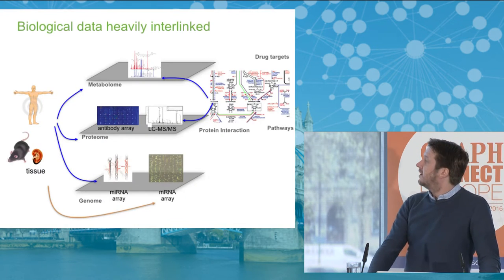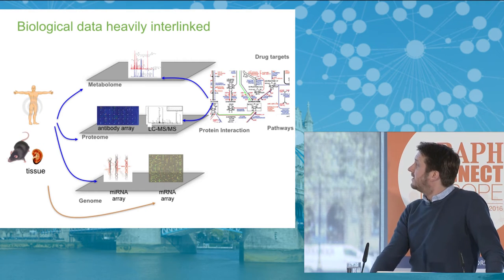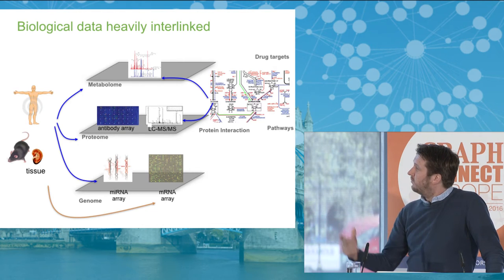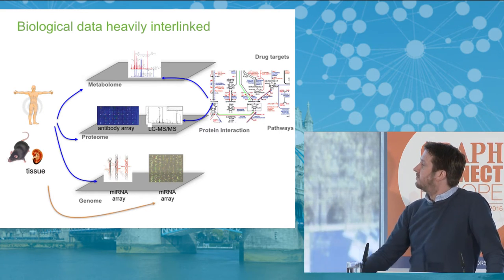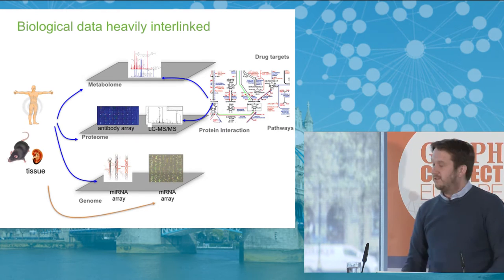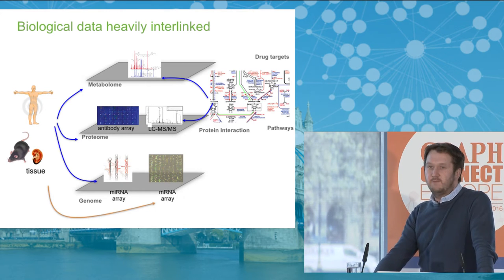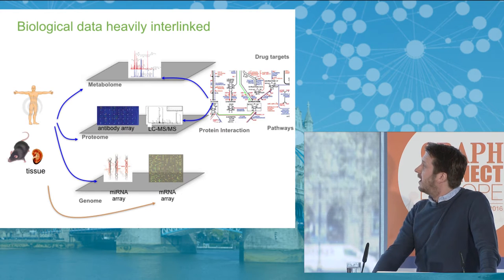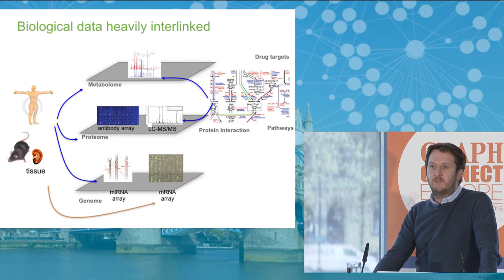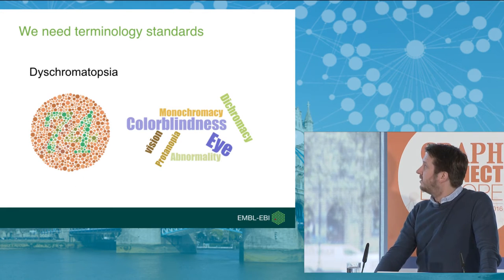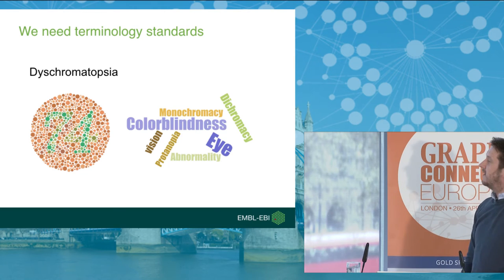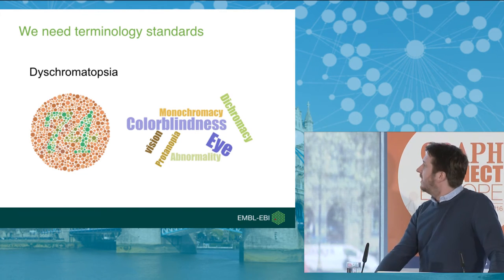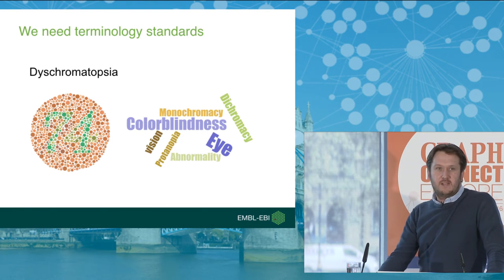Biological data is heavily interconnected, and one of the challenges is how we deal with the integration of this data. How do we know that a particular protein in one database is the same as a protein in another database? One of the ways we tackle this is to understand the types of data we have - what a gene is, or a protein, or a pathway. We do this through developing standards and particularly controlled vocabularies or ontologies. The reason we need terminology standards is fairly obvious: a disease like dyschromatopsia, which we'd probably know as color blindness, has a whole range of terms and words related to it.